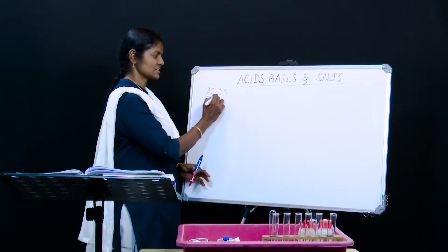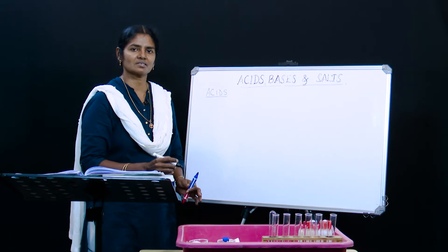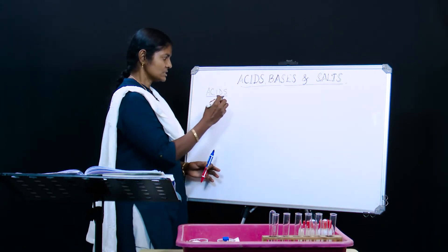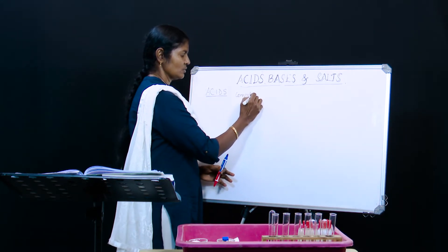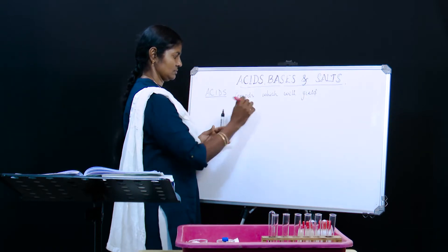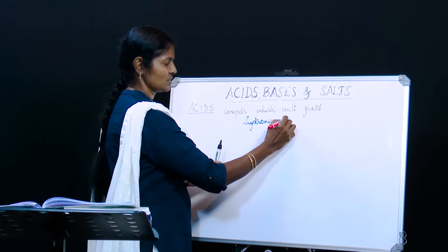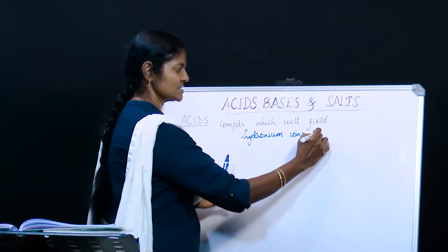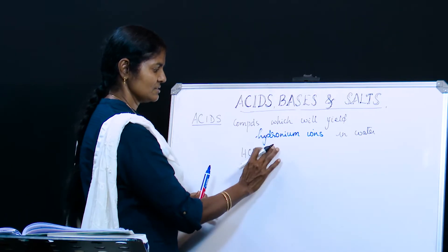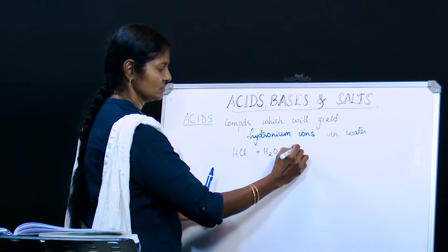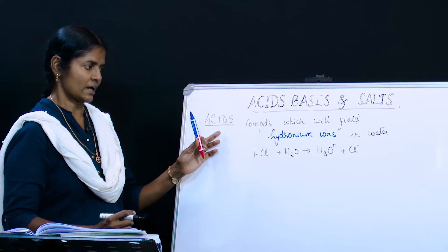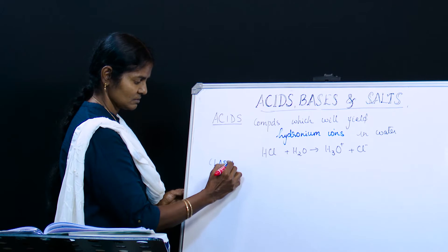Acids is a term you are familiar with — you have seen and heard this from sixth standard, but as we move to higher classes the definition becomes better and bigger. Acids are compounds which yield hydronium ions. We have seen hydronium ions in chemical bonding, so when acids are present in water they yield hydronium ions. For example, hydrochloric acid plus water gives hydronium ion plus chloride ion.